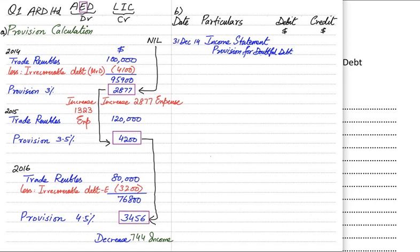Provision for Doubtful Debt account is a contra asset. A contra asset is something that reduces the value of an asset. For example, trade receivables are our asset — if there is a doubt that customers won't pay, we create an account called Provision for Doubtful Debt. Provision is always credit in nature. So in the first year: income statement is debited because it is an expense; provision for doubtful debt is credited. We do not credit the customer directly because this 2,877 doesn't belong to one customer — it is a general percentage applied to all debtors.